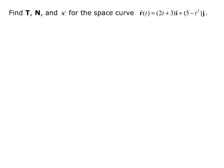Our example says: find T, N, and kappa for the space curve R of t equals (2t + 3)i plus (5 minus t squared)j. Remember, by definition, the unit tangent vector capital T of lowercase t equals the velocity divided by the magnitude of velocity.